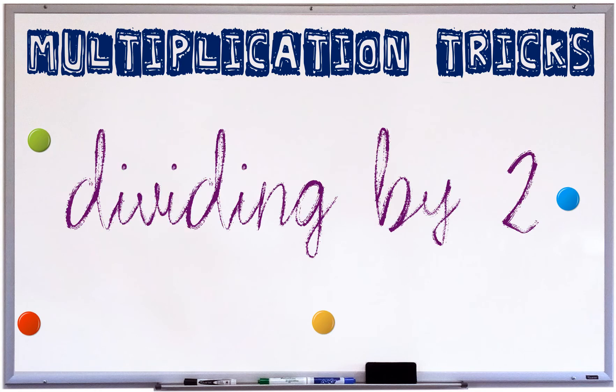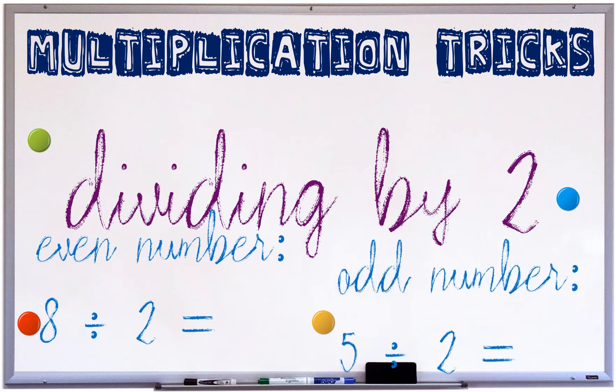Multiplication tricks. When you are dividing by 2, even numbers are great. Now remember the even numbers: 2, 4, 6, 8, 10. So I chose 8. 8 divided by 2 is 4.